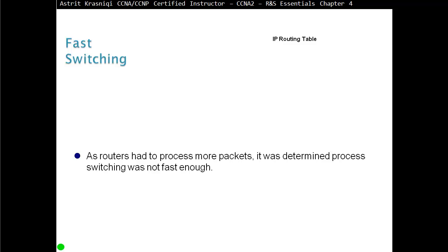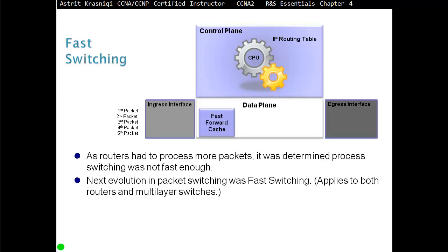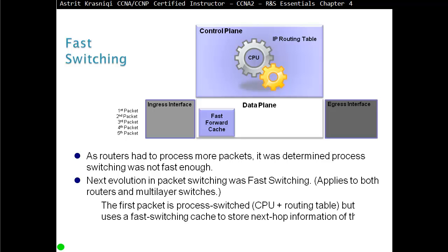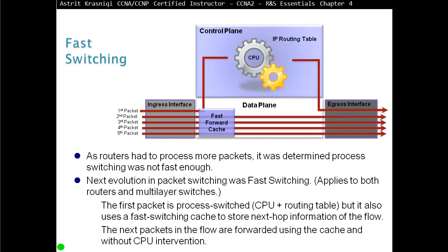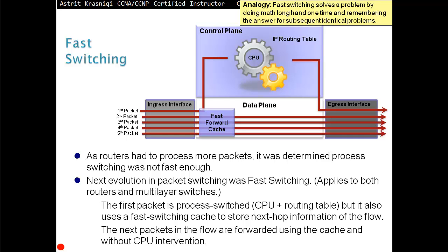Fast switching was the next evolution. As routers had to process more packets, process switching was not fast enough. With fast switching, the first packet is process-switched — it goes to the CPU, which looks at the routing table, determines the exit interface, and forwards it. But before forwarding, it builds a fast forwarding cache. Subsequent packets don't go to the CPU — they just read the cache and are sent to the destination. The analogy: fast switching solves the problem by doing math longhand once, then remembering the answer for subsequent identical problems.